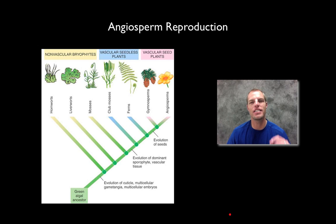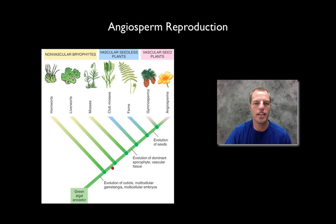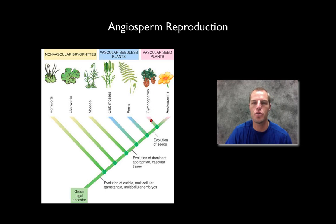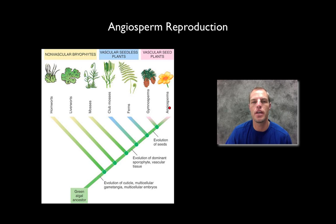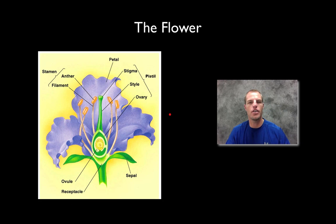Hey, this is Coach Boydston and today we're going to continue our study on plant reproduction, specifically looking at the angiosperms. We looked a little bit at the history of some evolution of the plant kingdom. We looked closely at gymnosperms which reproduced with what we call naked seed, meaning their seed was not housed in a fruit. Today we're going to be looking at angiosperms — plants that reproduce with a flower and whose seeds are housed in what we call a fruit.